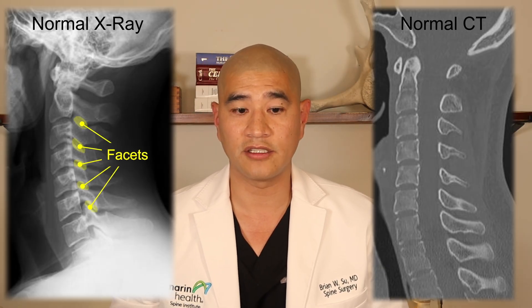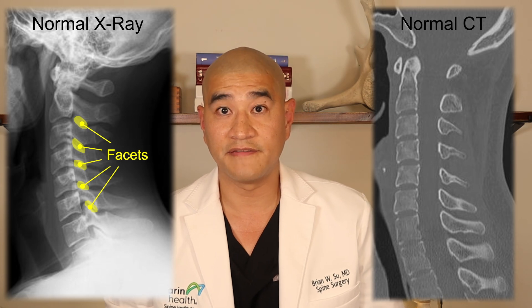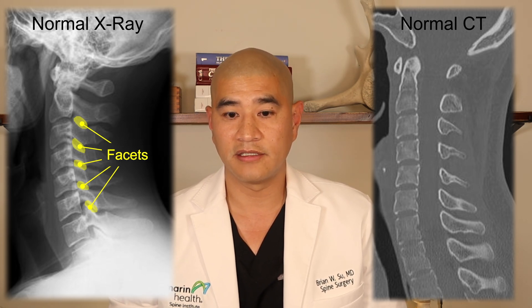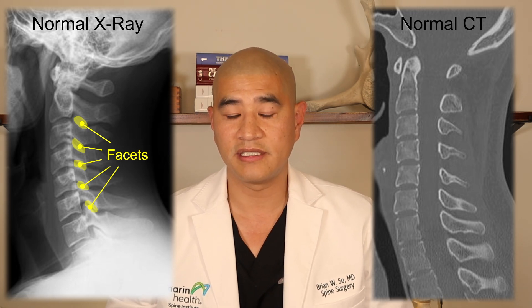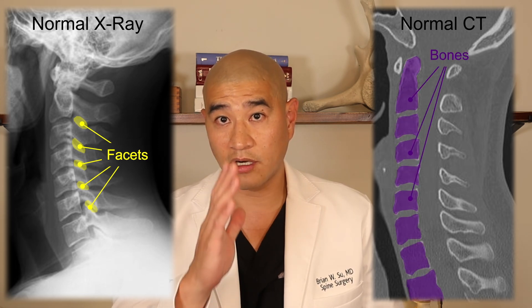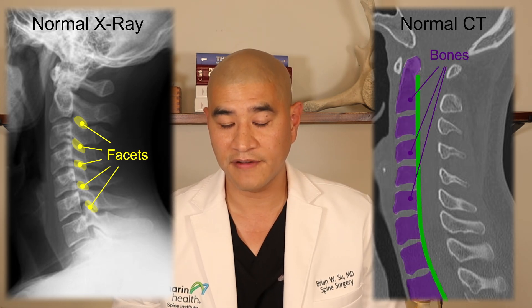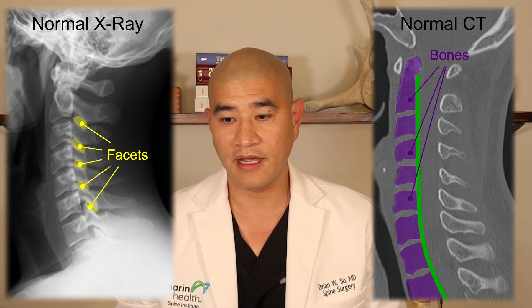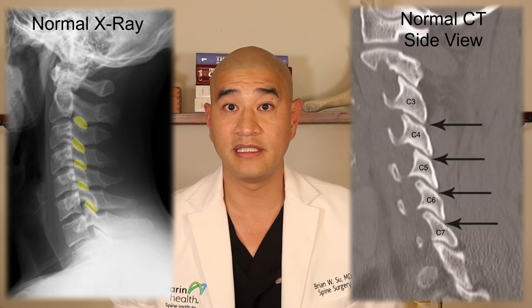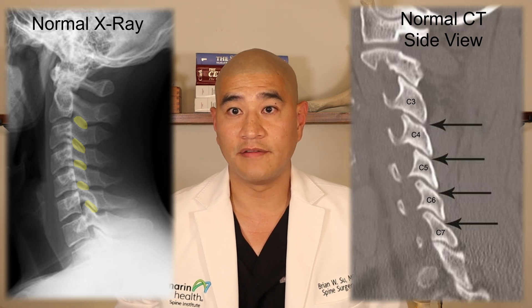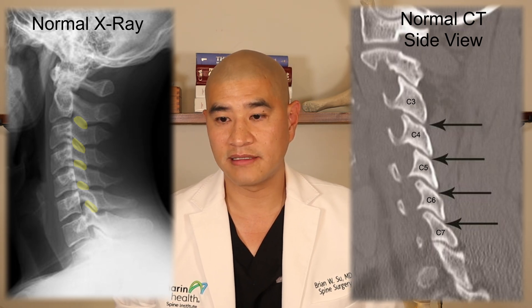Here's a normal X-ray and CT showing the cervical facets. On the X-ray you'll see the facets in the back of the neck in a direct side view. The CT view also shows the bones, all lined up one in front of another perfectly — this is of course a normal looking CT. On the side view of the CT you'll see the facet joints as well as the cervical facets and lateral masses themselves.